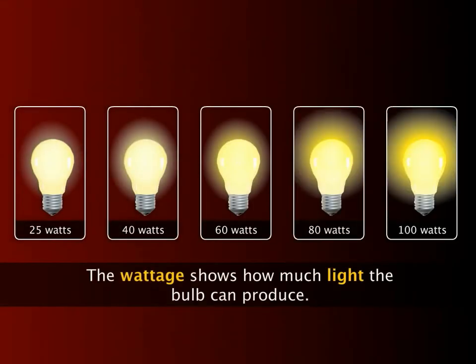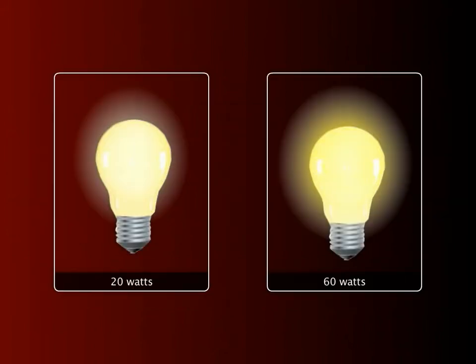The wattage is a measure of how much light the bulb can produce. So a 60 watt bulb will give more light than a 20 watt.